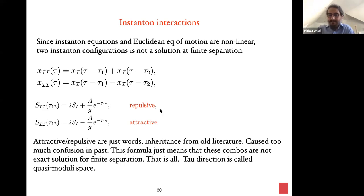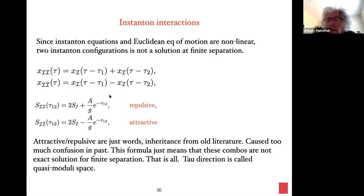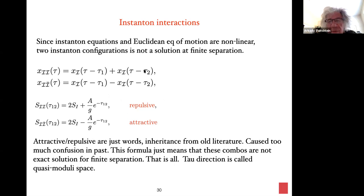The usual instanton equation in N=1 supersymmetric quantum mechanics is ẋ = ±W′. For the periodic potential this gives the classical instanton. Since instanton equations are nonlinear, a two-instanton configuration is not an exact solution. You can calculate the action of the instanton–instanton or instanton–anti-instanton configuration; there is a separation-dependent interaction term. Old literature called this a repulsive or attractive potential, but these words cause confusion.